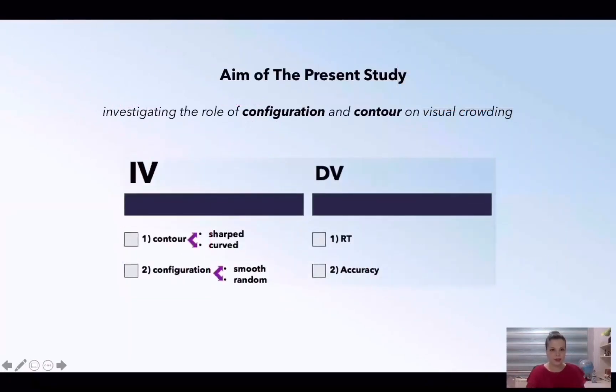In the present study, we aim to investigate the role of configuration and contour on visual crowding. Our independent variables had two levels. We used a triangle for sharp-edged contour and a circle for curved-edged one. We also manipulate the overall configuration of the screen, either smooth or random. We collected reaction time and accuracy from the participants.